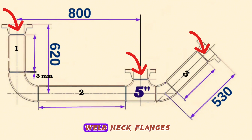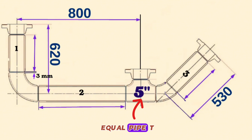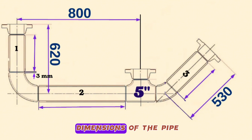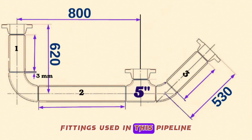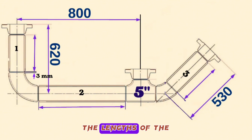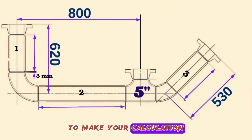The pipeline also includes 3 off 5-inch weld neck flanges, 1 off 5-inch 90-degree butt weld elbow, 1 piece 5-inch equal pipe tee, and 1 off 5-inch 45-degree butt weld elbow. We can find the dimensions of the pipe fittings used in this pipeline from their dimension charts. Let's calculate the lengths of the pipe pieces by using the dimensions of the pipe fittings. We will use the 2D model of this pipeline to make the calculations easier to understand.